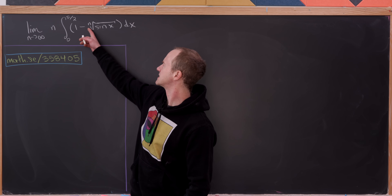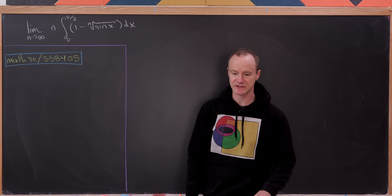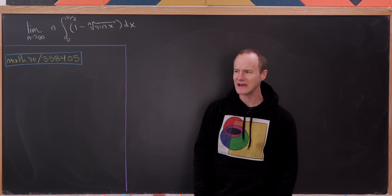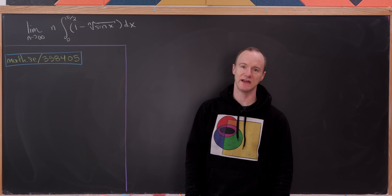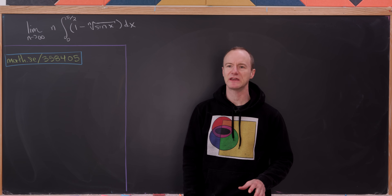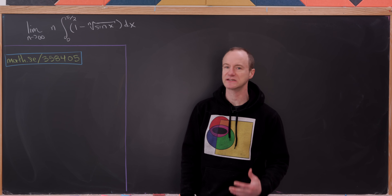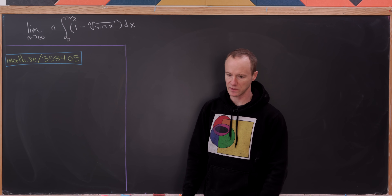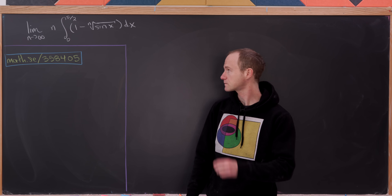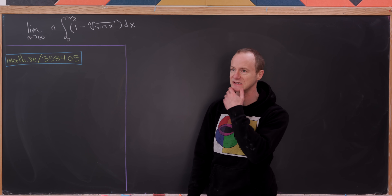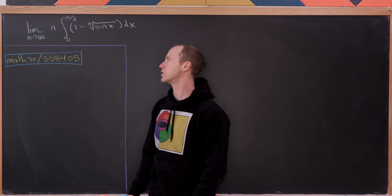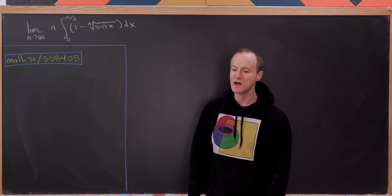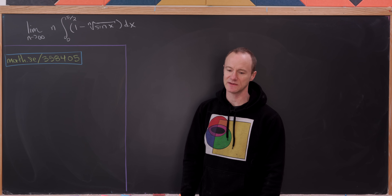Let's observe that this nth root of sin(x) as n approaches infinity will approach 1, because the nth root of anything approaches 1 as n approaches infinity. We do have to be careful that we're dealing with positive numbers, but since x is between 0 and π/2, sine will be non-negative. Since we have this n approaching infinity and this thing approaching 1 minus 1, we have an indeterminate form of type infinity times 0.